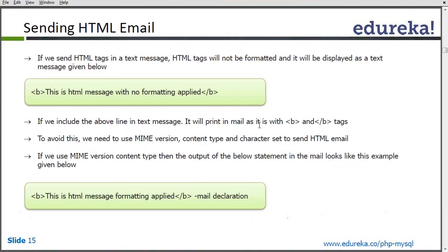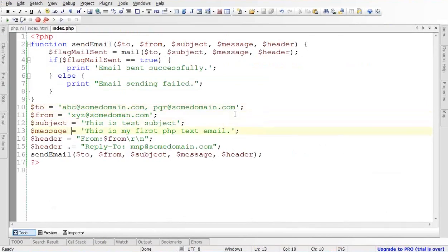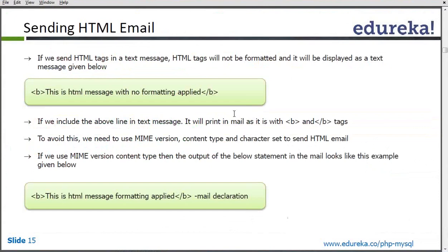Now let's move to sending HTML emails. Till now we sent plain text emails. If we write HTML tags like bold — a <b> tag — in the subject line or message, it won't be interpreted as HTML. It will simply send the text with the B tags literally. So in order to have our HTML interpreted before it is sent, we need to tell the mail server that this is HTML content.